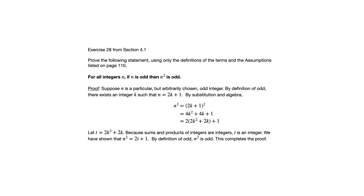So now we've shown that n squared can be written as 2t + 1, where t is an integer. So now by definition of odd, that means n squared must be odd. And that's what we needed to show. So that completes the proof. A lot of the proofs in this section are going to look very similar to this.